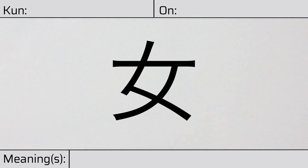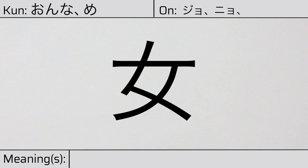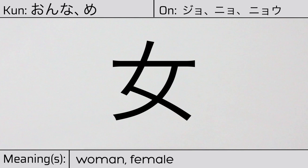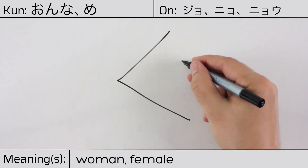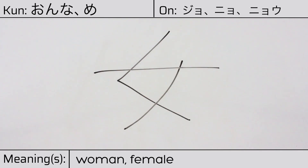Welcome to this lesson on Japanese kanji. Today, we'll be discussing this character. This kanji has kunyomi or Japanese reading of onna or me, and it has onyomi or Chinese readings of jo or niou. This character has the meanings woman or female. Here is the stroke order.